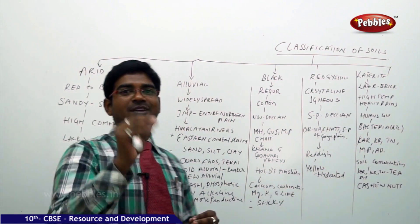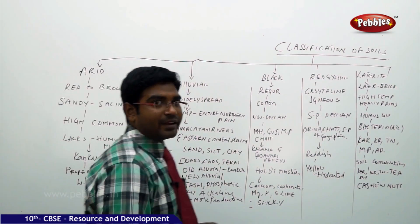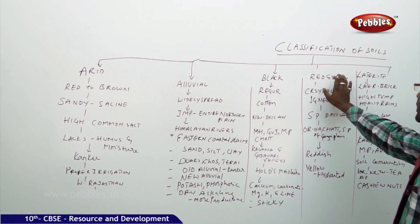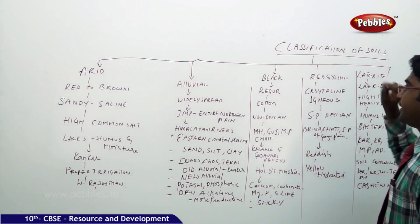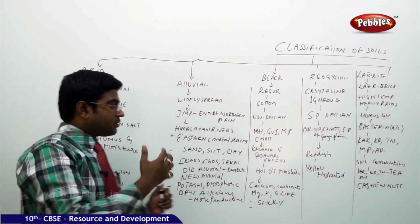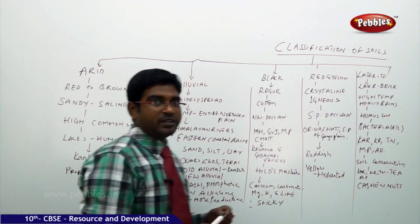As I told you, we have five major categories of soils. I have taken all the five major categories. Let us see here. Alluvial soil, black soil, red and yellow soil, laterite soil, and the arid soil or the desert soil. Let us go on one by one. Starting from the left.